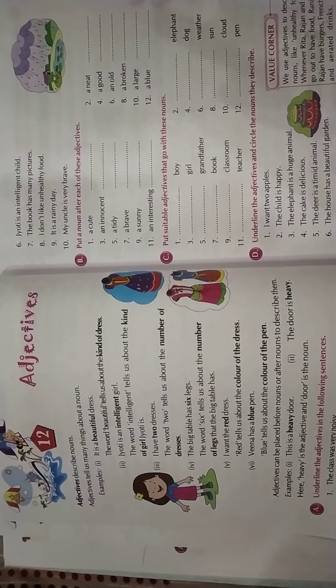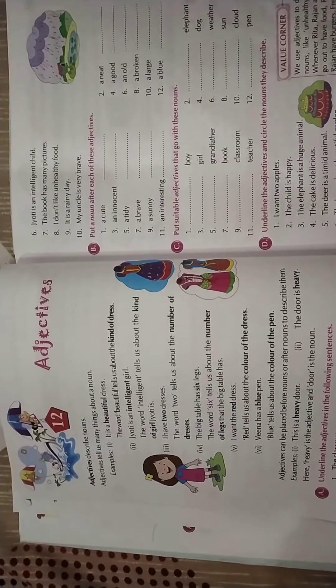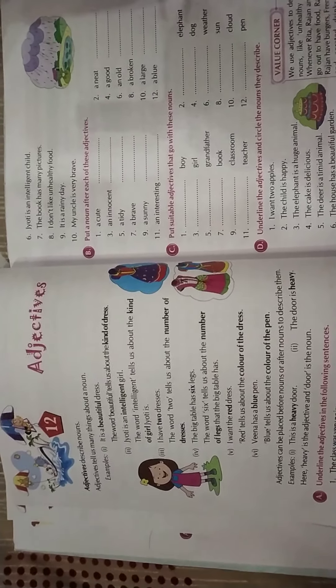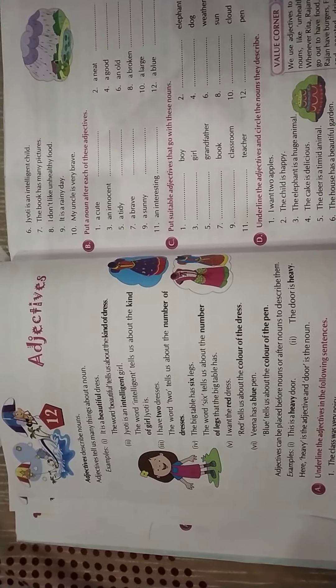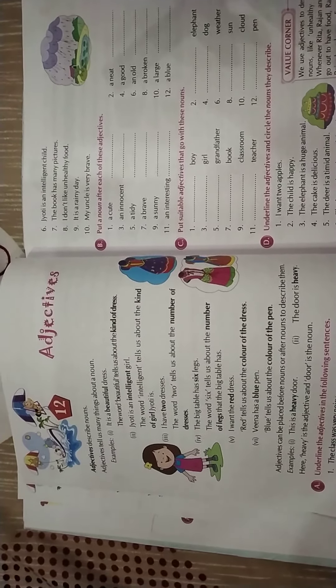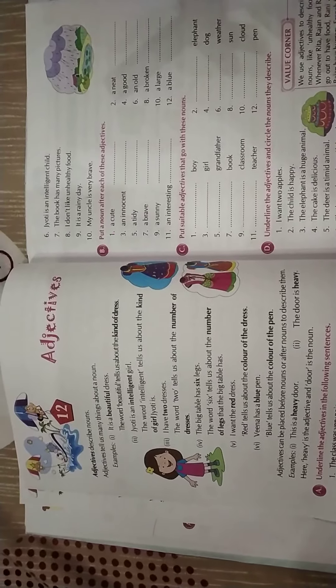Adjectives describe what type a noun is — its color, numbers, and all its qualities. For example: beautiful, two, three, yellow color — these qualities are all adjectives. The words which tell the qualities about nouns are called adjectives. Understand?